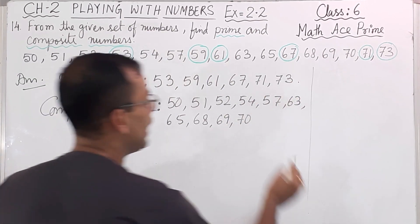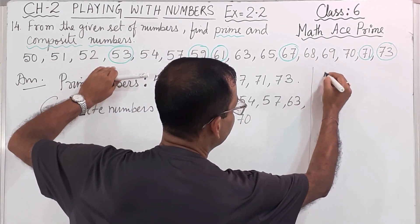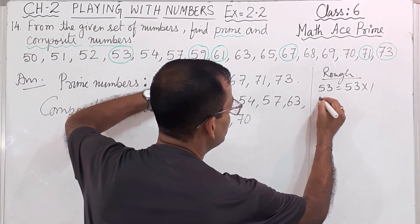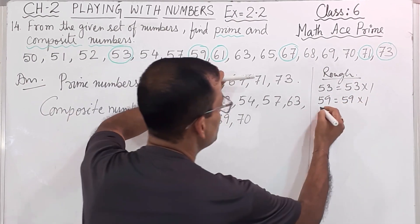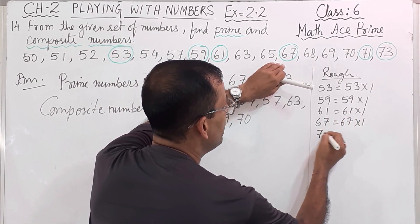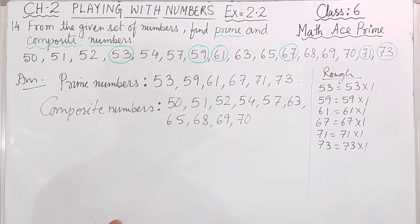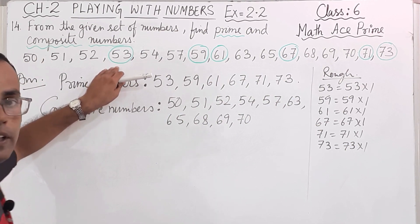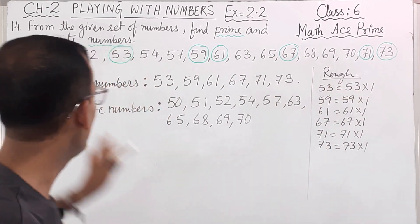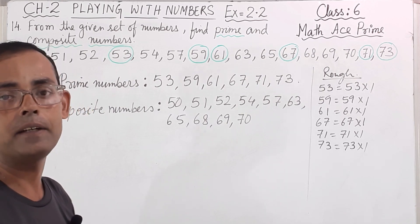Once more — prime numbers have only two factors: the number itself and 1. For example, 53 is 53 times 1, 59 is 59 times 1, 61 is 61 times 1, 67 is 67 times 1, 71 is 71 times 1, 73 is 73 times 1. So they each have exactly two factors. I hope question number 14 is understood, along with the concept of prime and composite numbers.